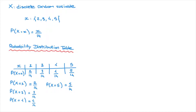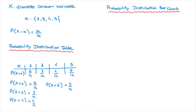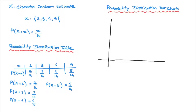Now that we've seen how to construct a probability distribution table, let's move on to illustrating this with a probability distribution bar chart. All the information we need is summarized in the probability distribution table. We draw a vertical axis and a horizontal axis: the horizontal axis represents all possible values the discrete random variable can take.